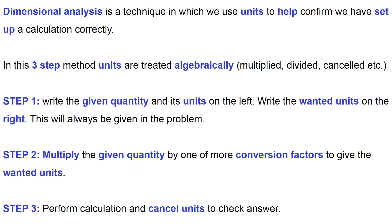Dimensional analysis is a system where we use unit labels as a technique to see whether our calculation is heading in the right direction. What we're using are the unit labels to help confirm that we've got our calculation set up correctly. It's generally done in three steps. The essence is that we leave the units in while carrying out our mathematical operations, and we treat them algebraically — we multiply, divide, and cancel our units. We write the given quantity and its units on the far left of the page, leave a big space, and then on the far right write the wanted units.